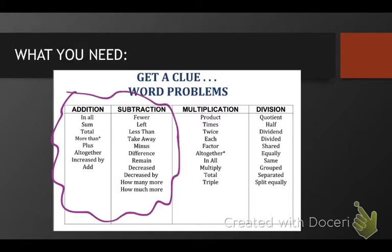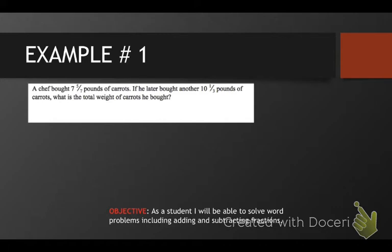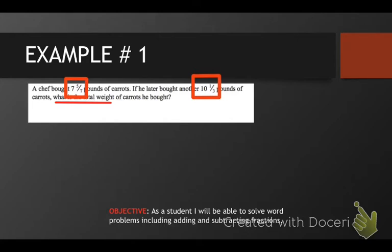We've already done the multiplication and division, but remember those were really difficult because it was hard to tell which is which. Adding and subtracting — much easier. Our first example: a chef bought seven and five-sevenths pounds of carrots. If he later bought another ten and one-third pounds of carrots, what is the total weight of carrots he bought? I have seven and five-sevenths pounds and I bought ten and one-third later. It asks me what is the total weight — when I talk about the total weight, it wants me to put them together. When I put two things together, I am going to add.